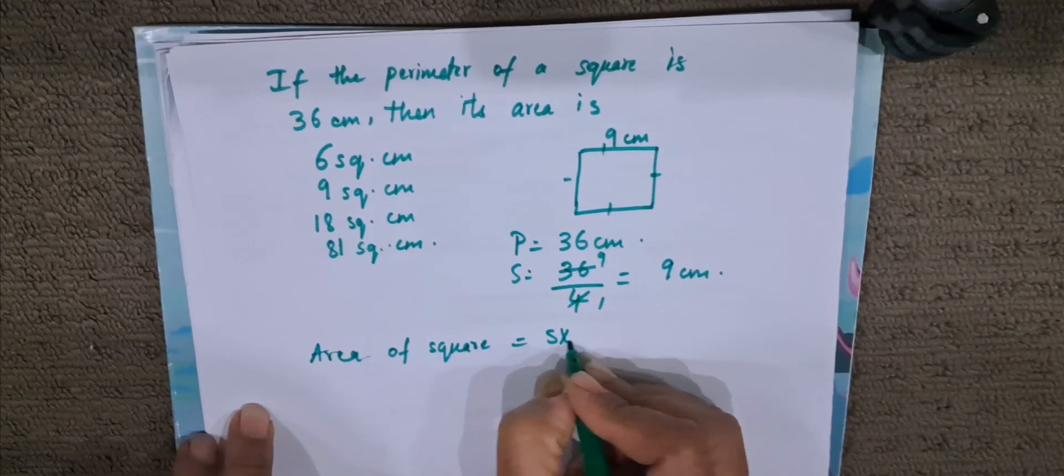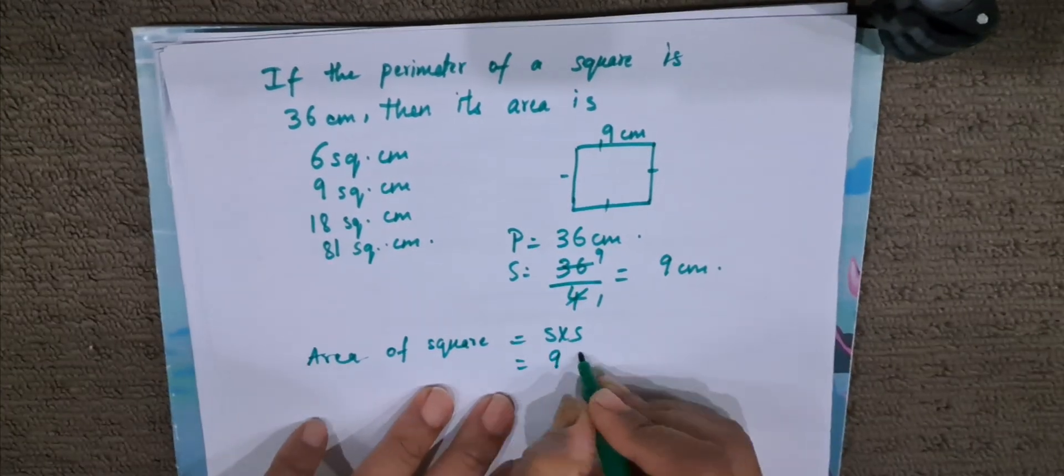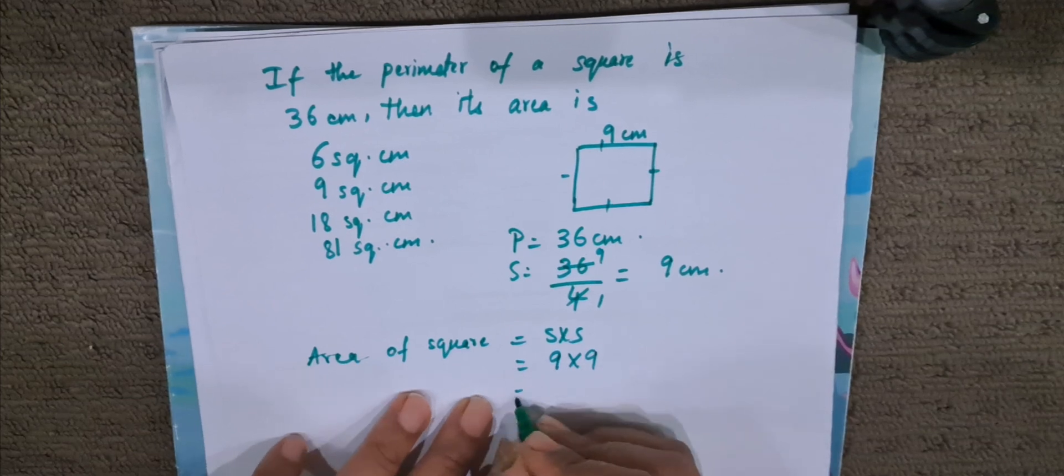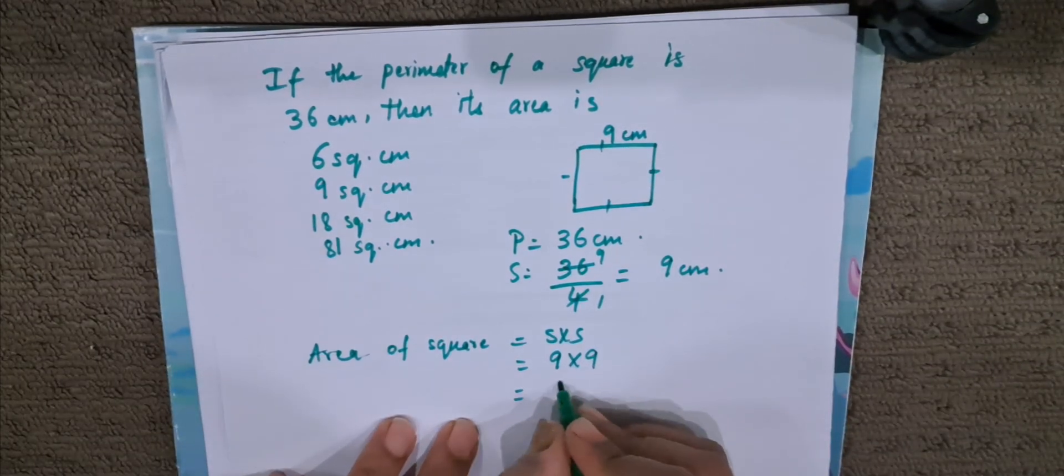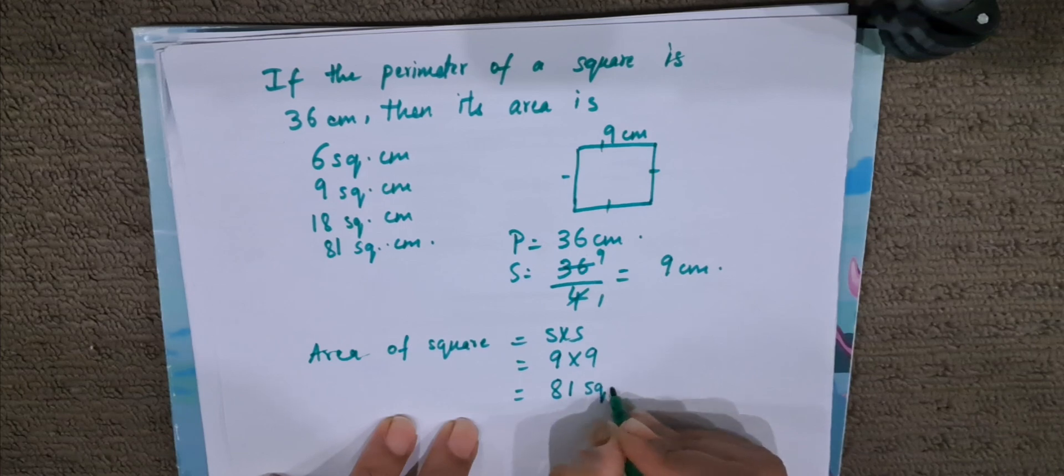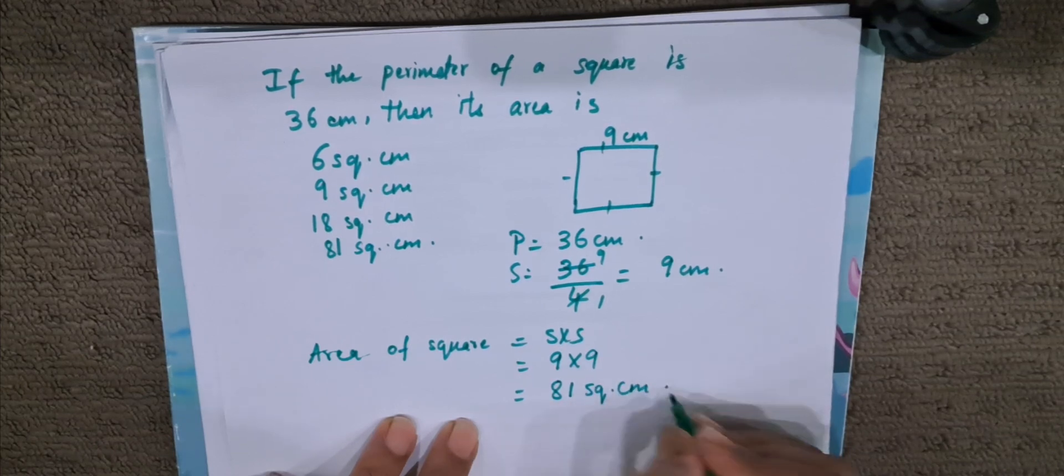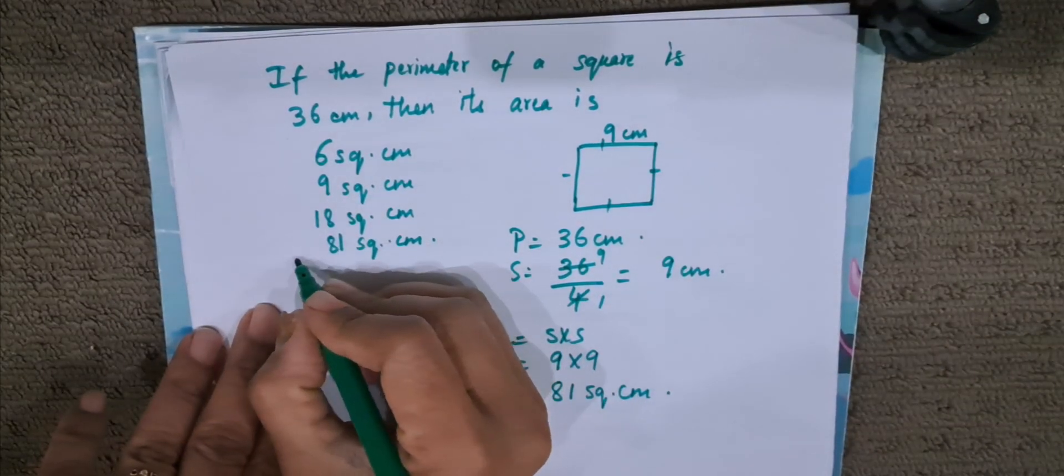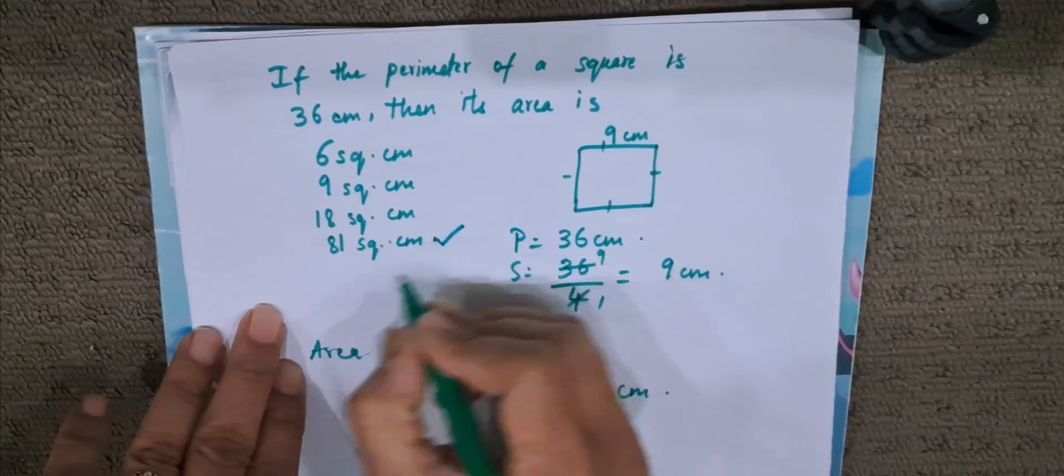Side by side, that means side square. That will be 9 into 9. So 9 cm into 9 cm. It will be 81 cm square, or we can write it as 81 square cm. So 81 square cm is the correct answer.